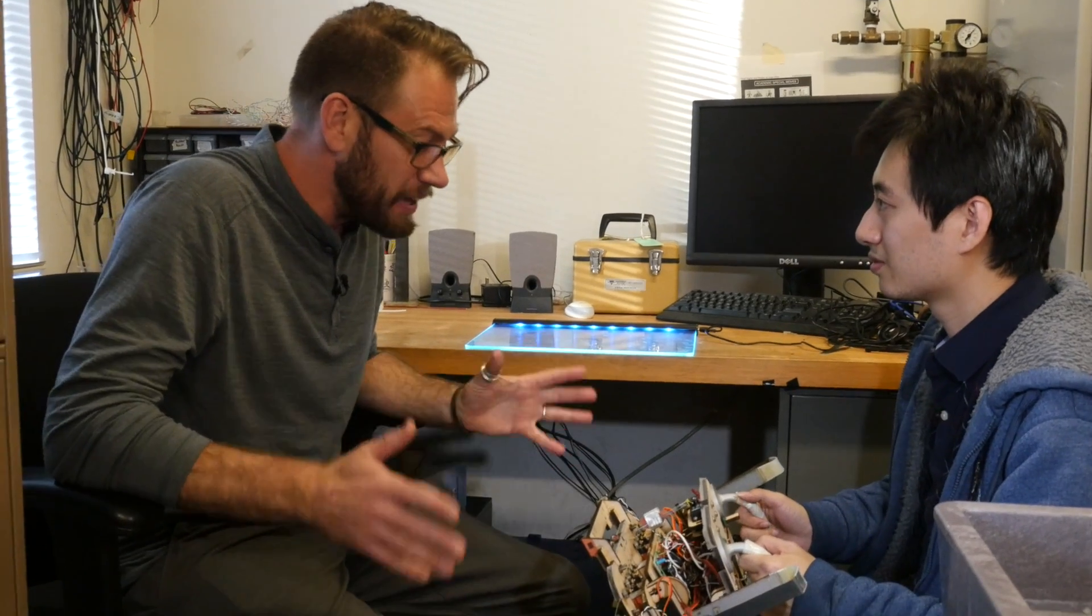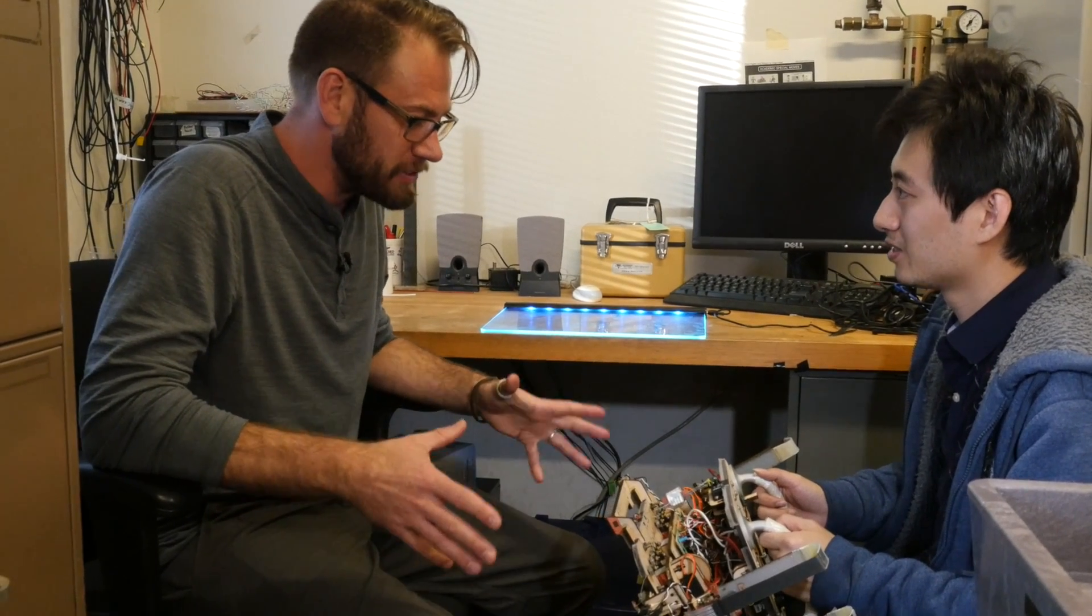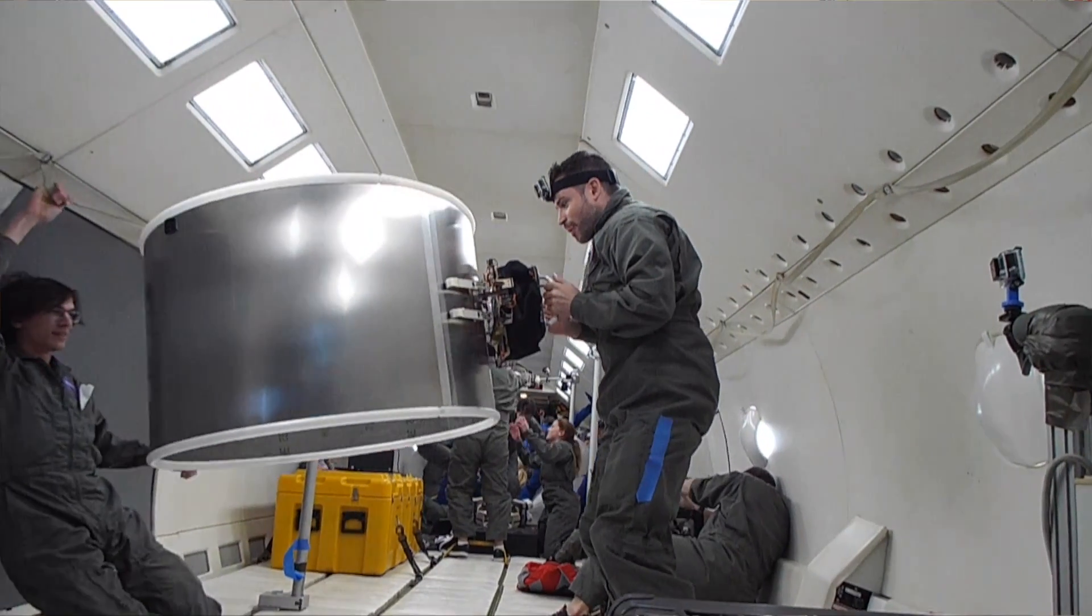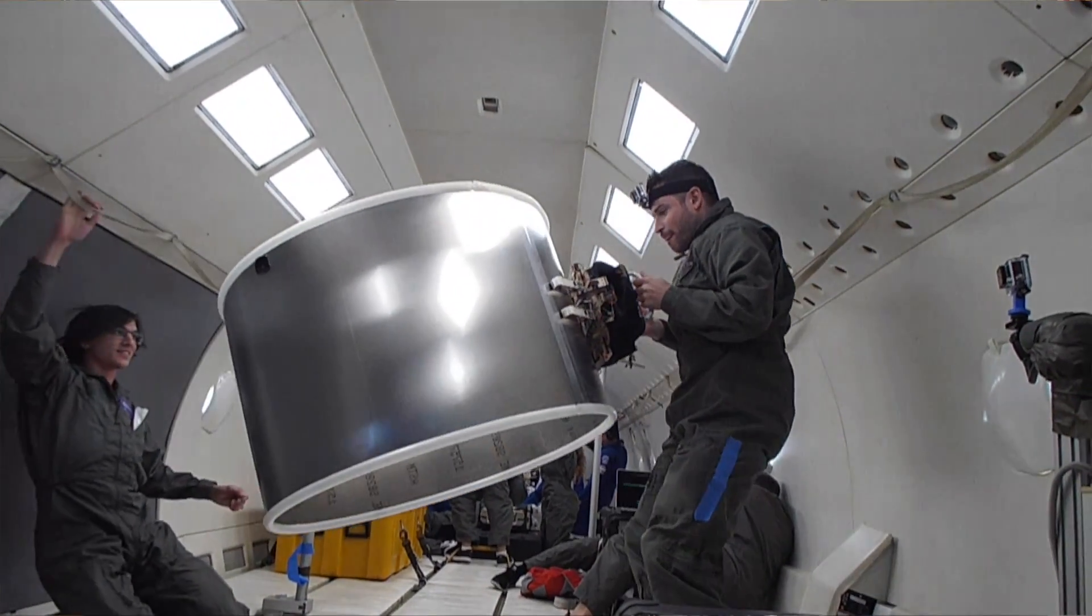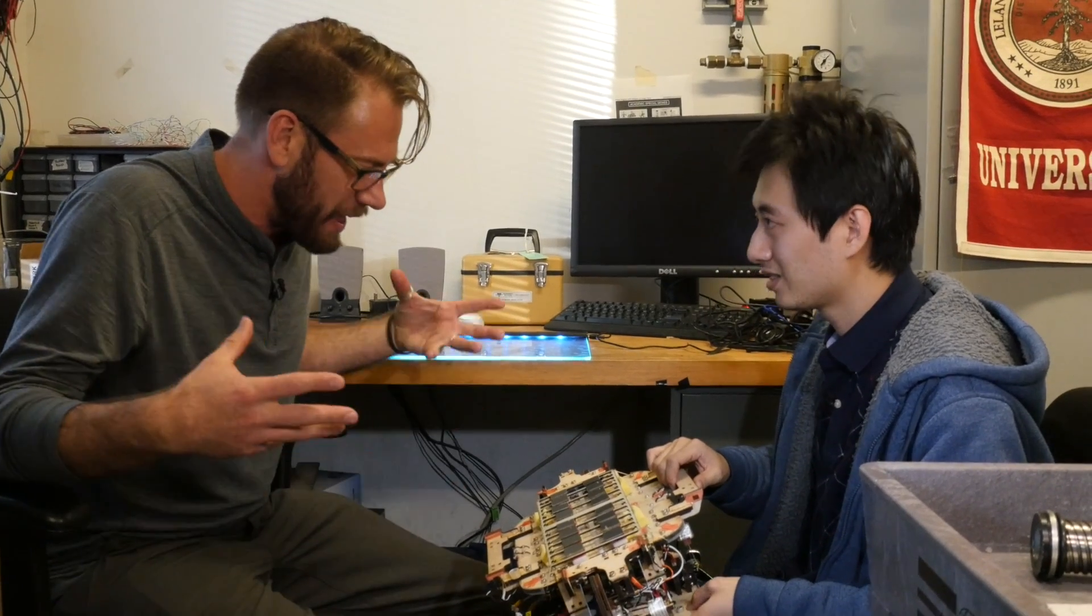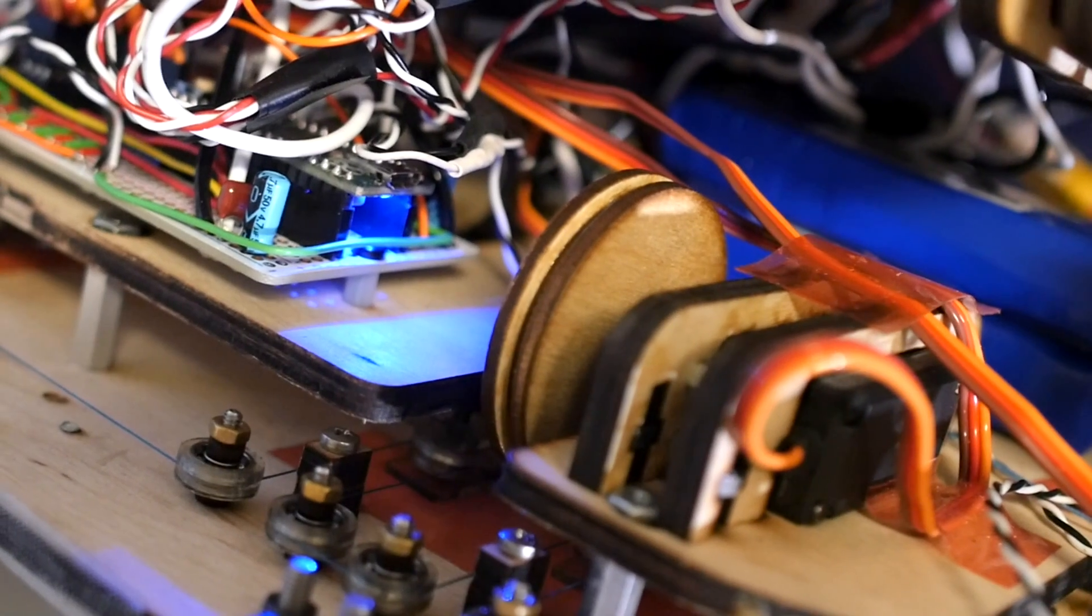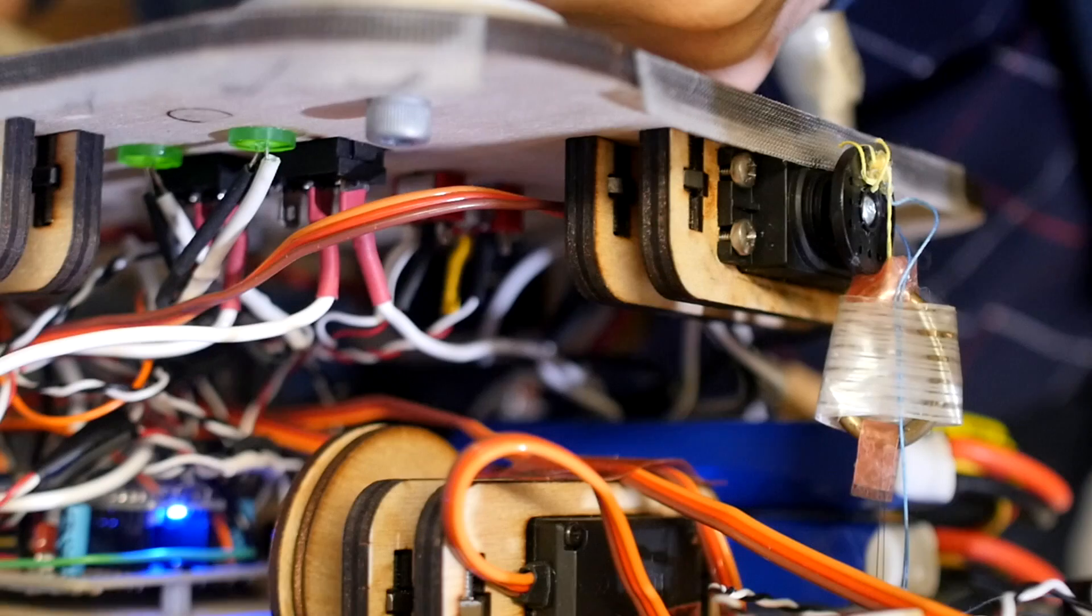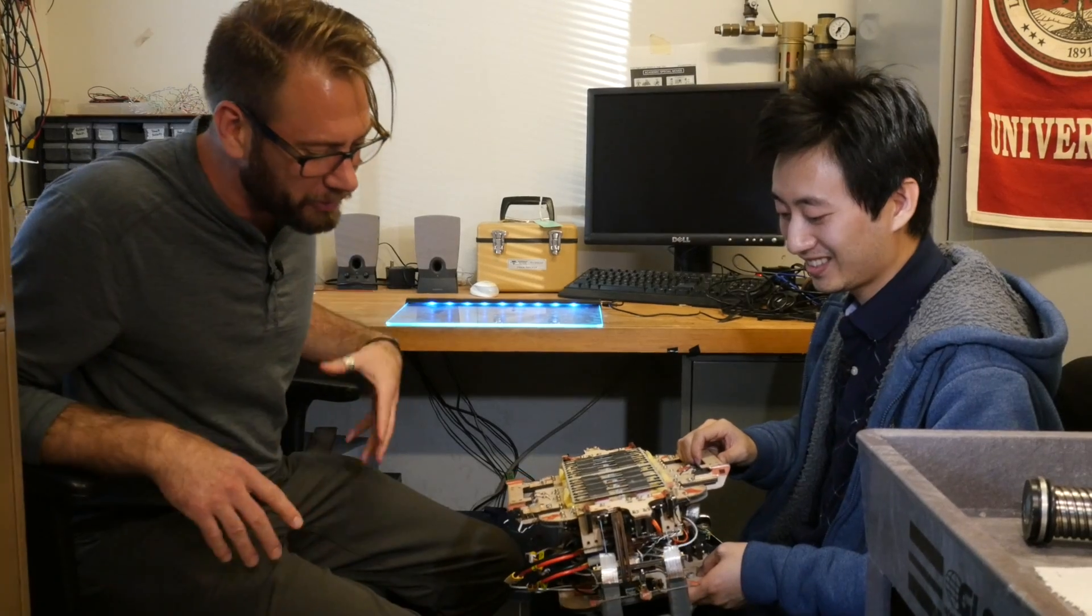So this is a space gripper. So you can grab things in outer space. So the whole idea is you grab them without pushing them away. This thing just looks like Frankenstein robotics, high-tech adhesive, but totally maker.